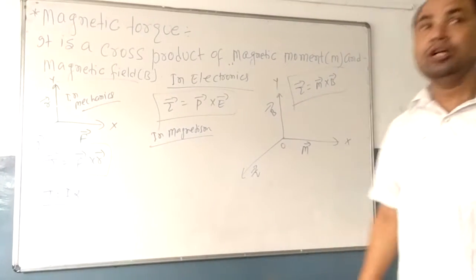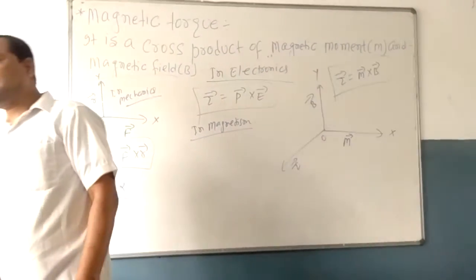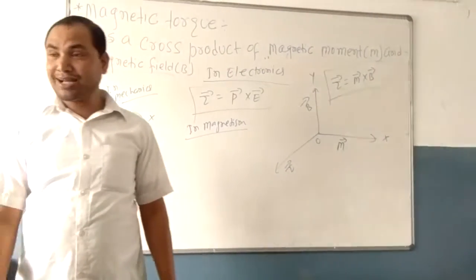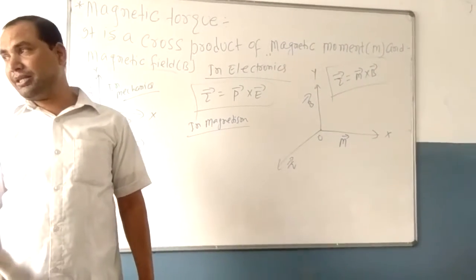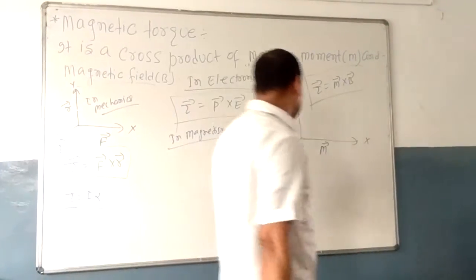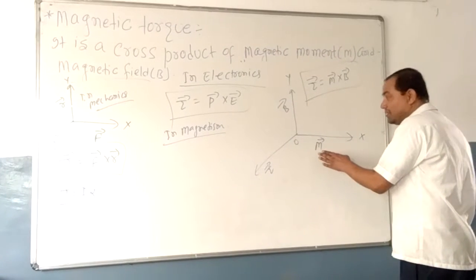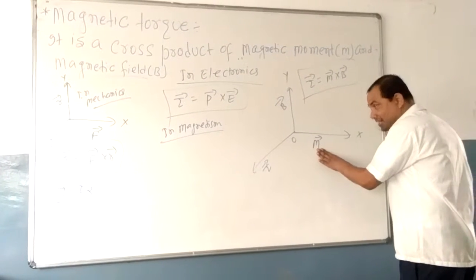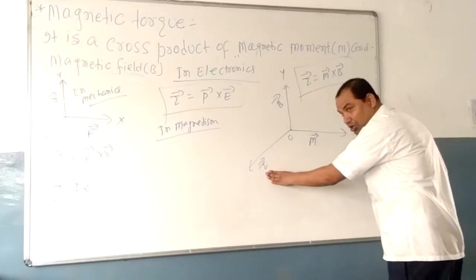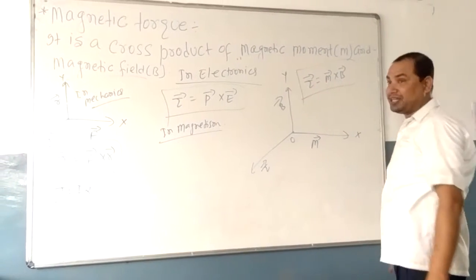As I told you, if vector A is acting along the x-axis and vector B is acting along the x-axis, then the resultant will be vector C acting along the z-axis, where vector C equals the cross product of vector A and vector B. Similarly, if the magnetic dipole moment is acting along the x-axis under the magnetic field B, then it experiences a magnetic torque, where magnetic torque is the cross product of magnetic dipole moment and magnetic field.